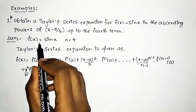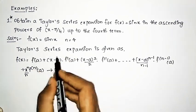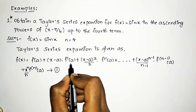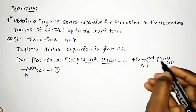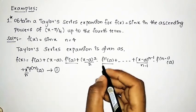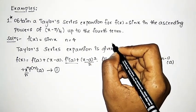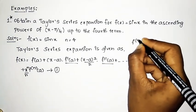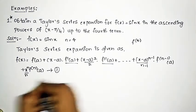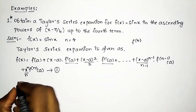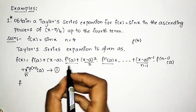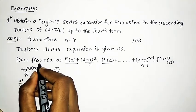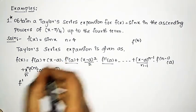Our first step is to substitute f(x) = sin(x). Before that, we need to find all the required derivatives: f'(a), f''(a), and so on. Since they have asked up to the fourth term, we need to find up to the fourth derivative. So initially we shall find the first derivative, f'(x).